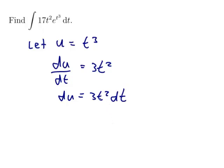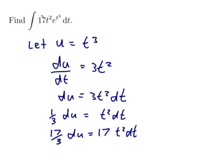I need to look for this 3t² dt in my integral. I've got a t² dt, but it's a 17 instead of a 3. So I'll divide both sides by 3: one-third du is t² dt. Then multiply both sides by 17: 17/3 du is 17t² dt.